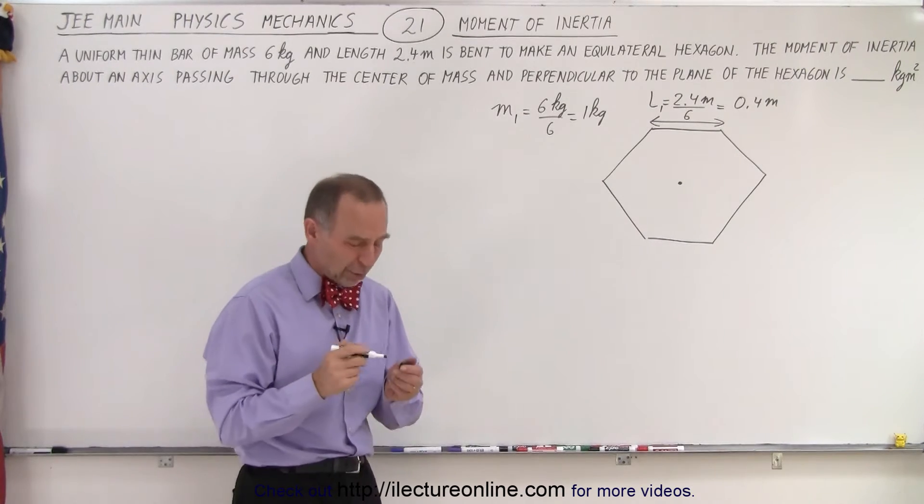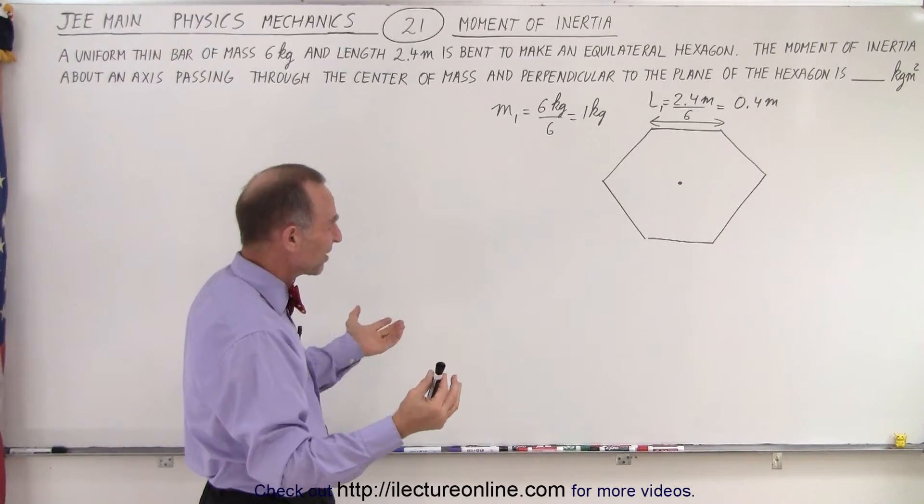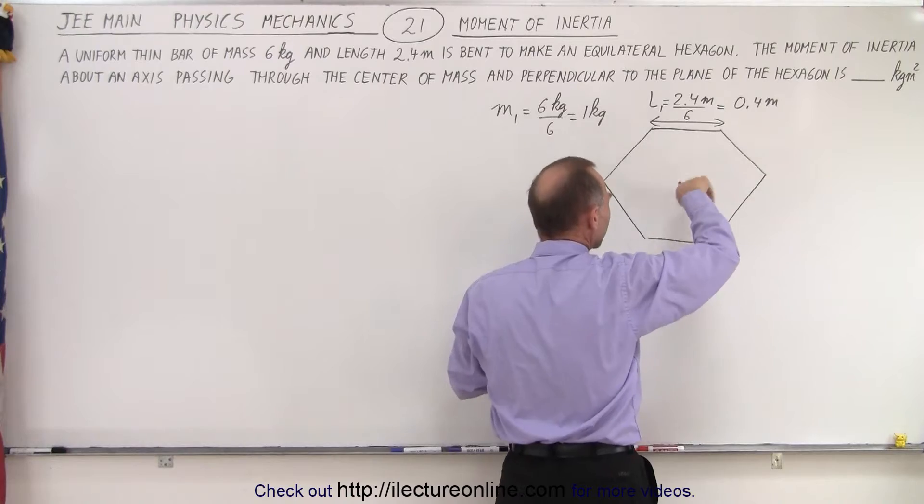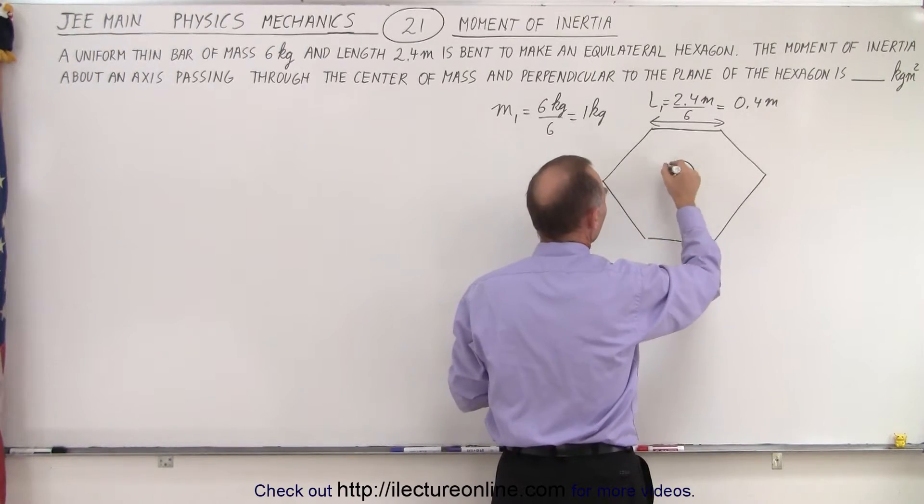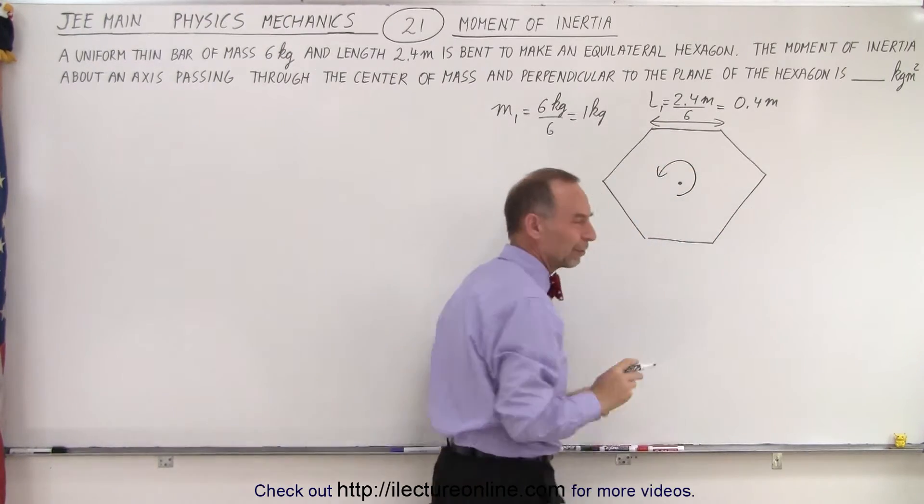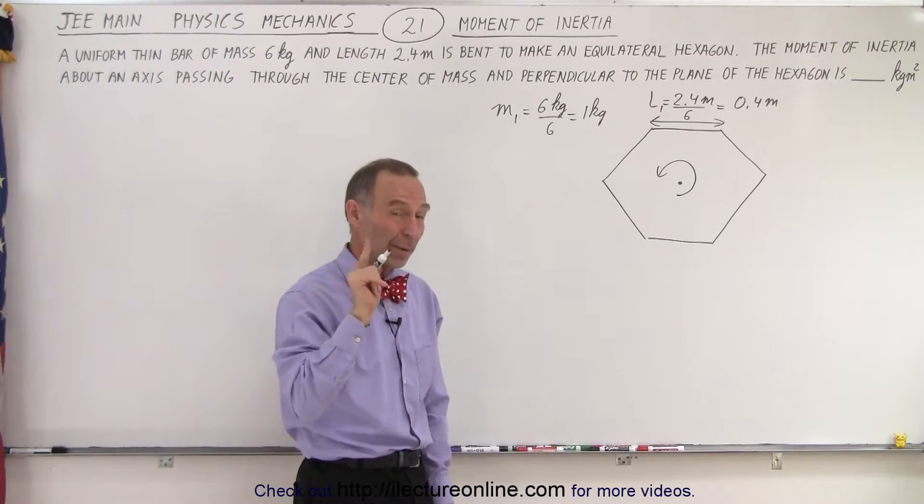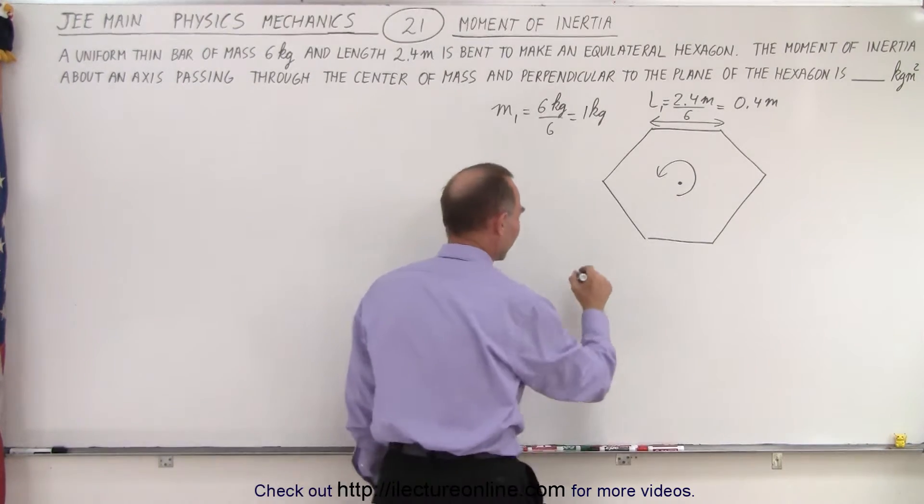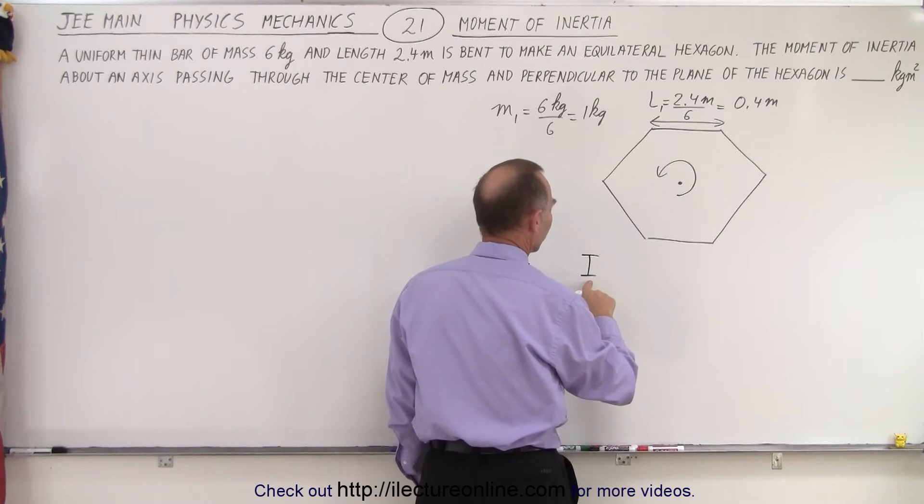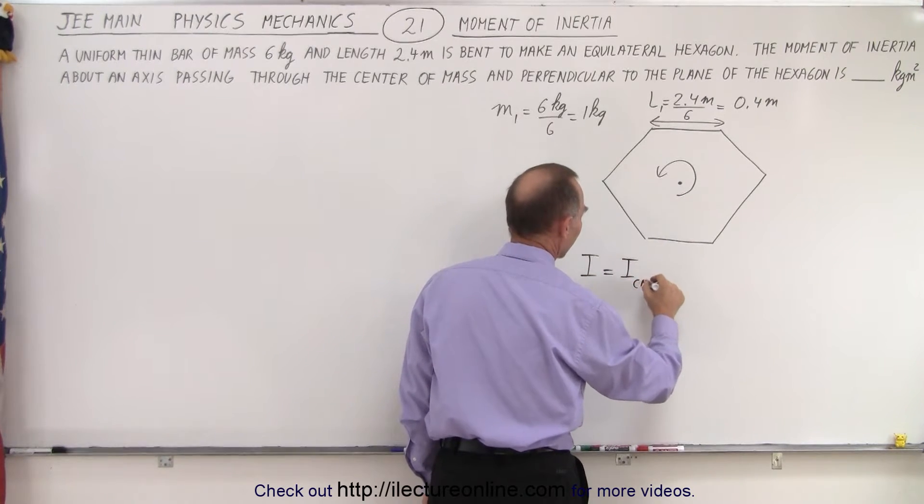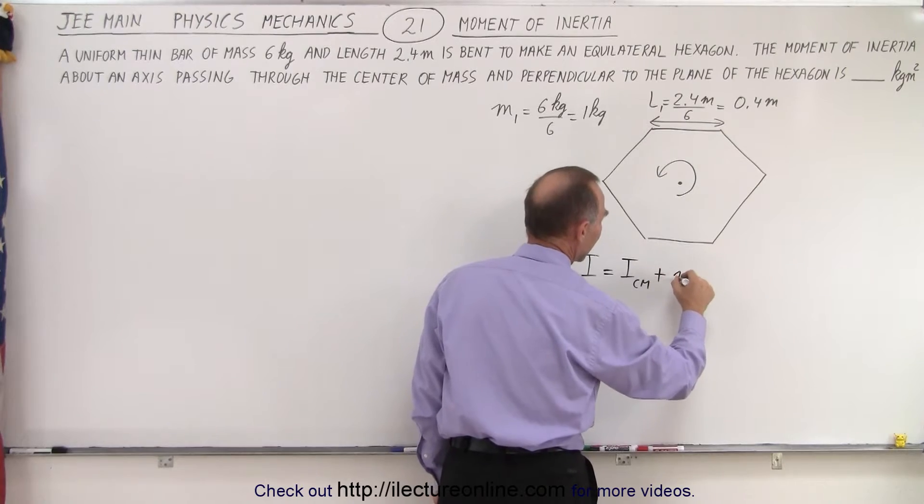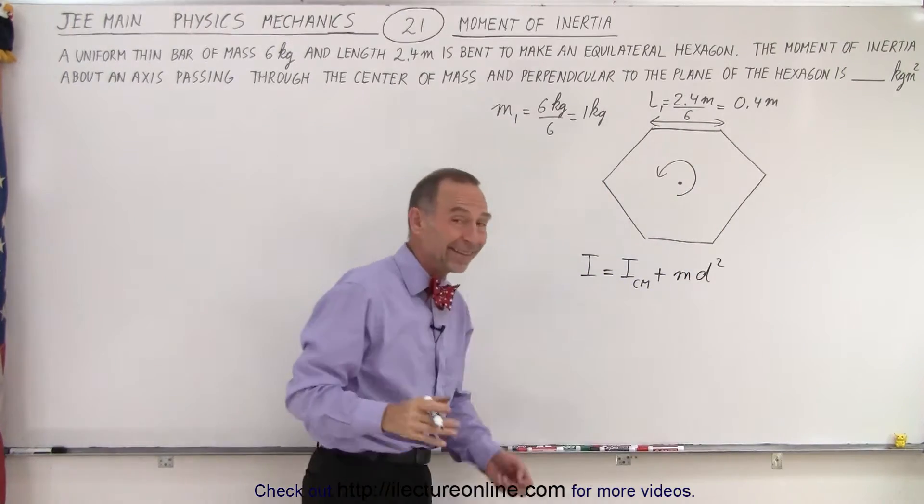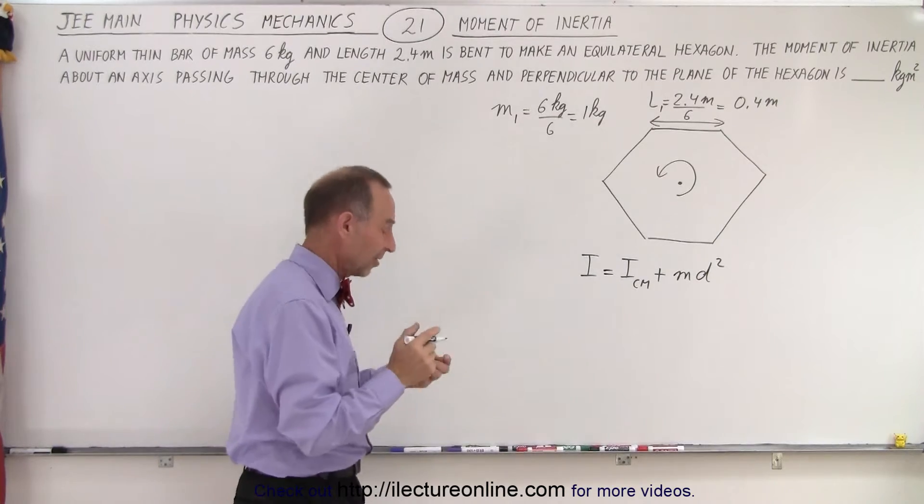But now the big question is how do we solve this? Because notice we're trying to find the moment of inertia, something that's rotating like this, and that seems like a very difficult problem until we remember this: the parallel axis theorem, which says that the moment of inertia is equal to the moment of inertia about the center mass plus md squared, where it's being displaced at distance d away from the center mass.